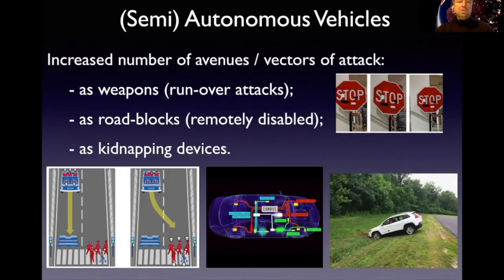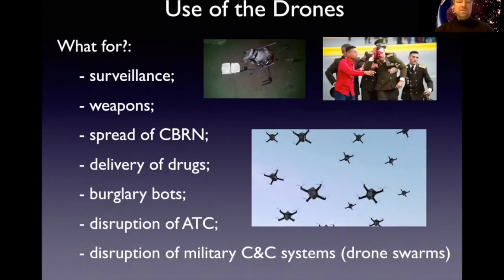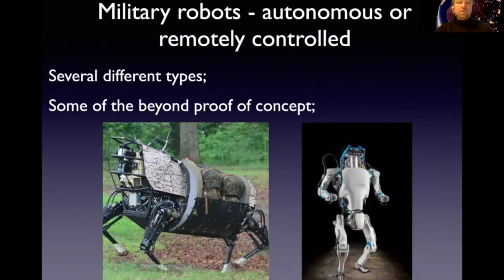In our analysis of the near future, we also cover the potential abuse of autonomous or semi-autonomous vehicles used as weapons, roadblocks, or even kidnapping devices, as well as the use of various types of drones for surveillance, as weapons, for drug delivery, or for the disruption of air traffic control systems.